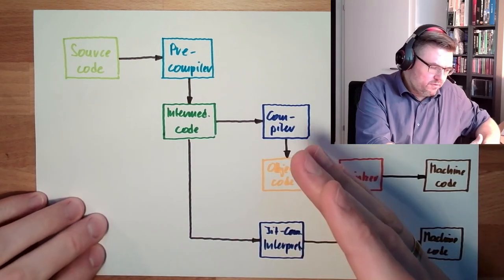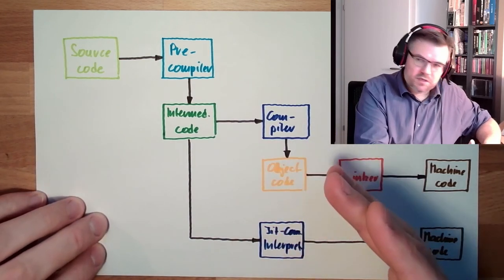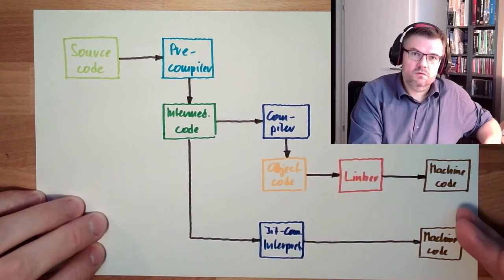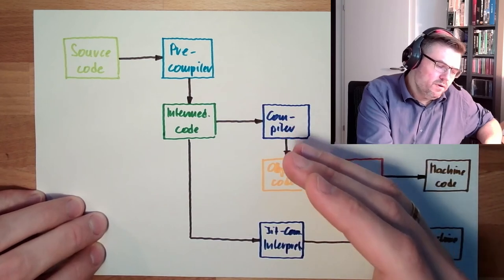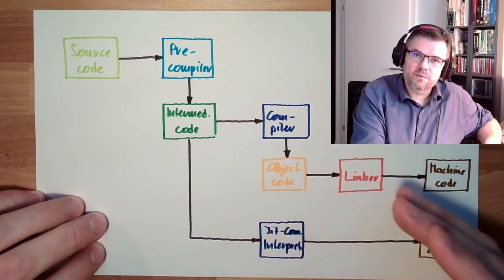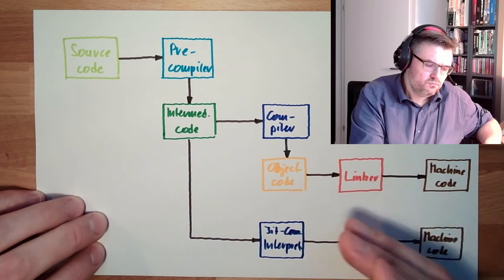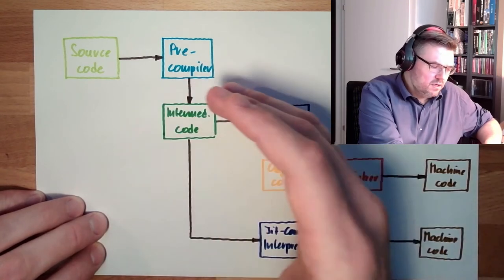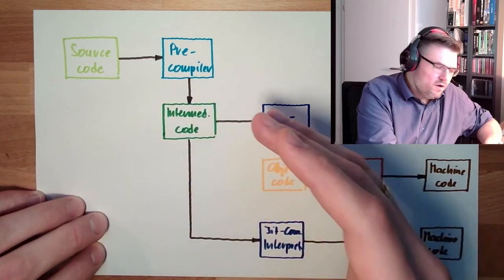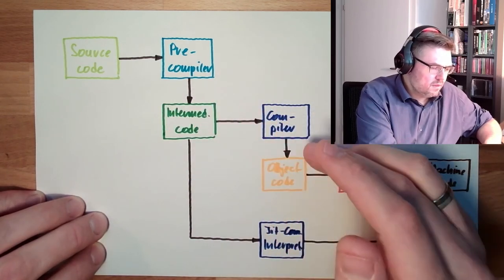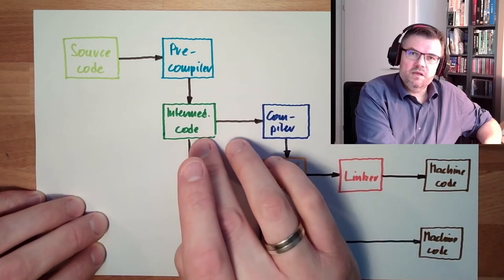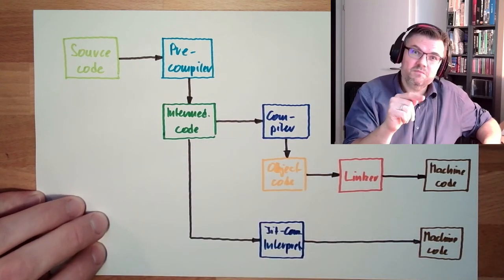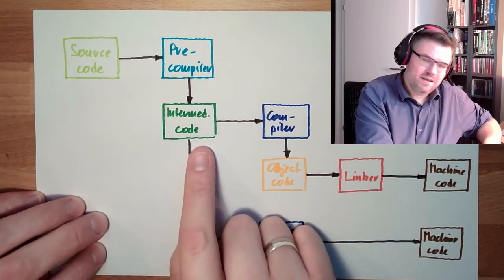So, and then if the optimization is done, the compiler will produce machine code. Like I said, not always directly machine code. Sometimes object code needs to be linked. So different modules need to be linked together. Or sometimes, then it would be called pre-compiler. Some intermediate code, platform non-specific, not platform-specific, intermediate code.